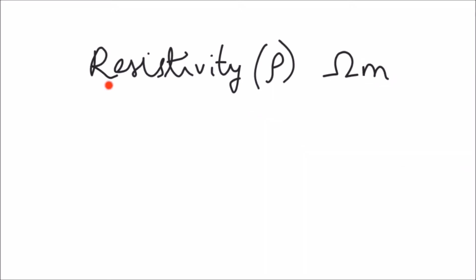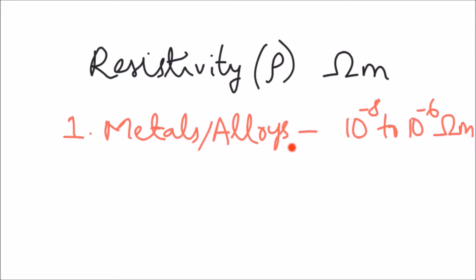Now let's look at the resistivity of different materials. Metals and alloys which conduct electricity very easily have very low resistivity, in the range of 10 power minus 8 to 10 power minus 6 ohm meter. This means they can conduct electricity easily.